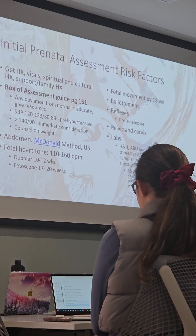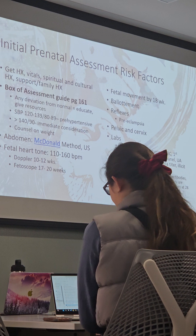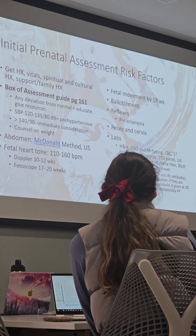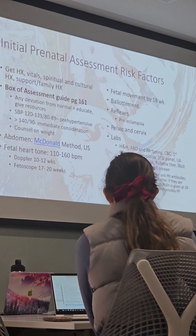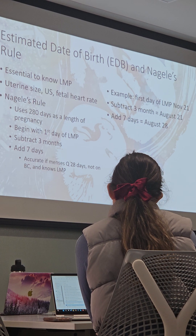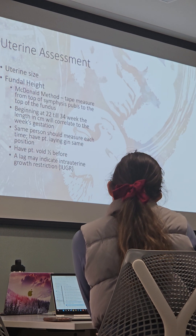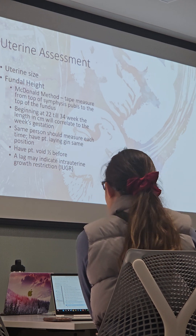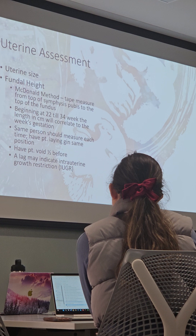Know when to anticipate fetal movement, know all the normal labs and why — especially around Rh typing and why that would be important. Know how to calculate Nagele's rule. Know how to check fundal height using the McDonald method and when you would be able to start doing that, and what would be anticipated if it was not measuring correctly.